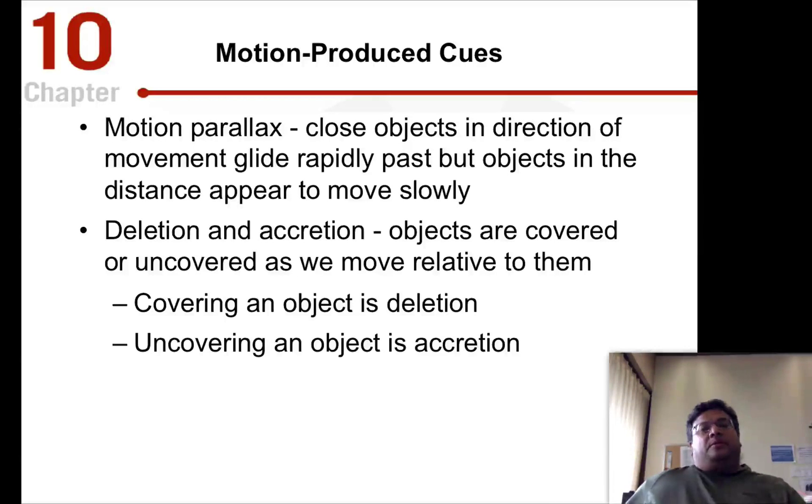So what we just talked about was monocular cues in judging distance. But we also have cues that are based on motion, motion-based cues. And of course, we need those, because we move through the world and we see things moving through the world, so we have to be able to judge where we're going and where things are going.